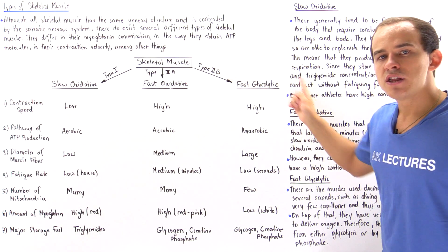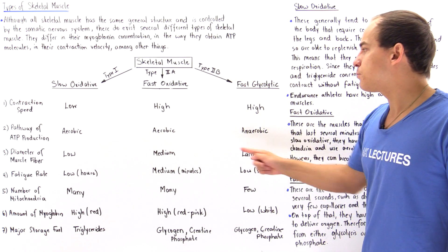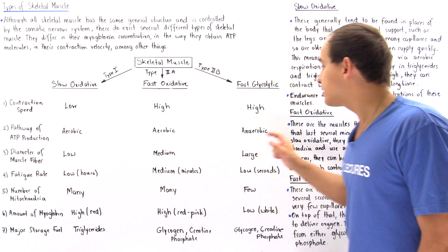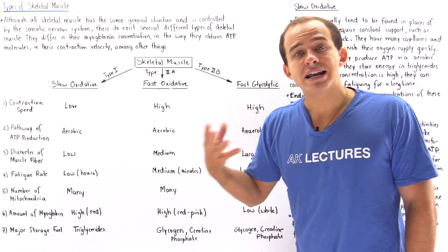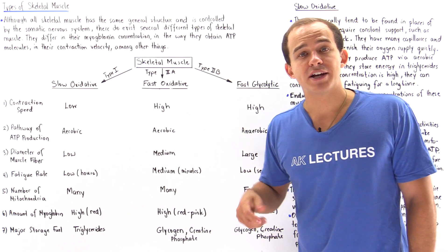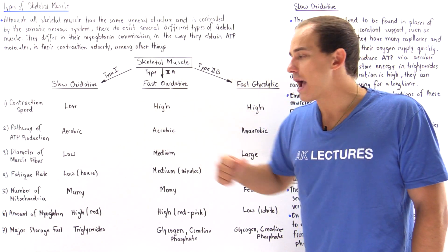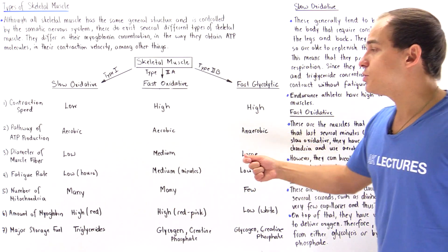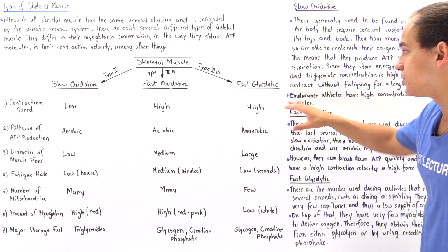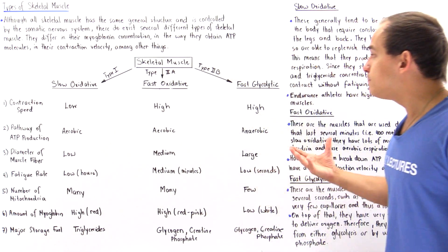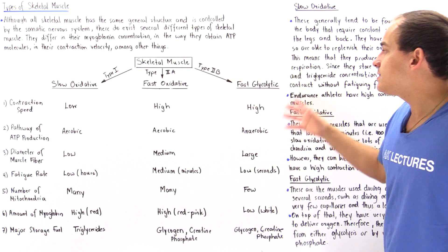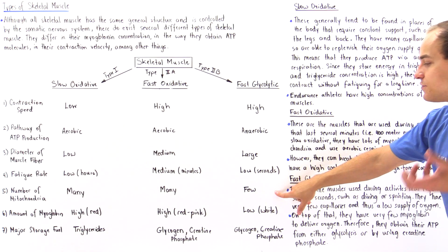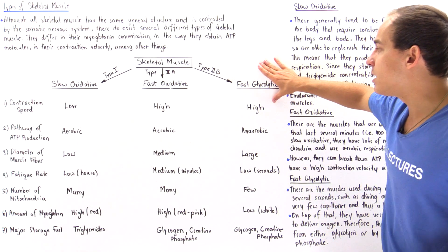Fast glycolytic muscles have a fast contraction speed because they break down ATP quickly. Unlike the other two types, these muscles do not use oxygen, so we have a low concentration of oxygen, not too many capillaries, and we use anaerobic respiration — meaning we only use glycolysis to form ATP, and also creatine phosphate. These muscles have a large diameter, meaning they produce the greatest contractile force out of all three muscle types, but they fatigue very quickly. So when sprinting — requiring perhaps 10 seconds — these are the muscles we use.